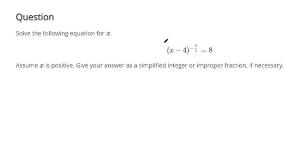If we're trying to get x by itself, my first step is to raise both sides to the reciprocal power, negative four-thirds, and I'll explain why.